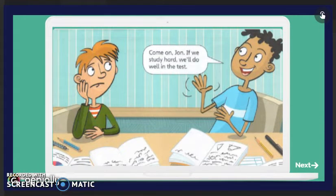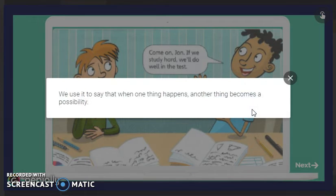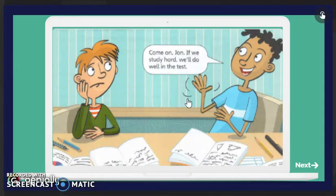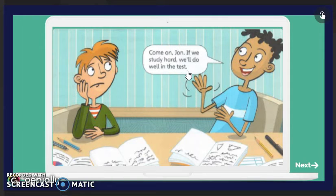Here we have an example: if we study hard, we'll do well in the test. We use the first conditional to say that when one thing happens, another thing becomes a possibility. For example, if we study hard, we'll do well in the test. The second part — the result — is a possibility; it has a high chance of happening, but it's not one hundred percent certain.